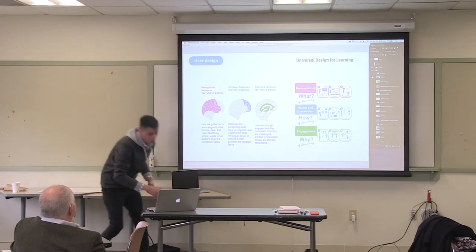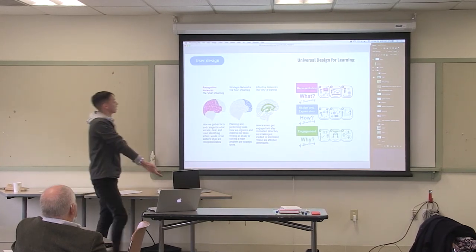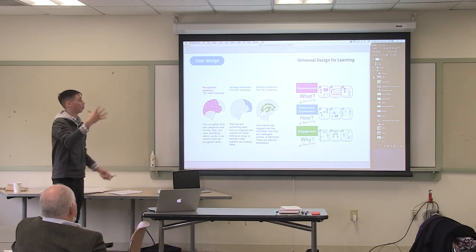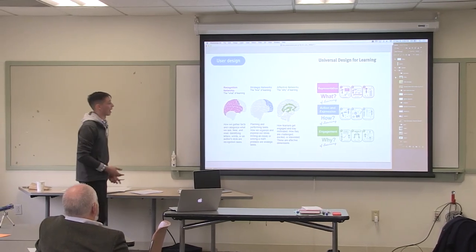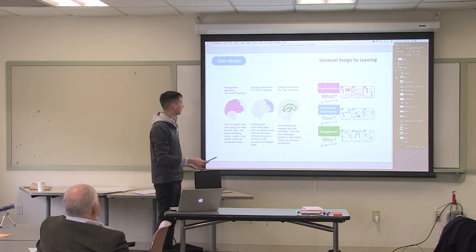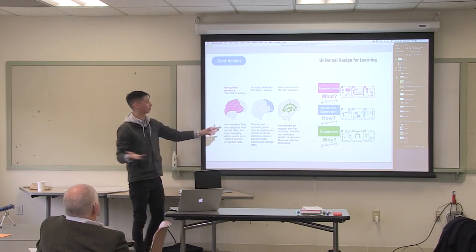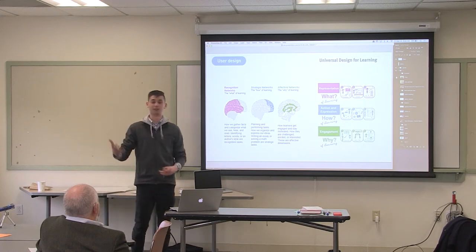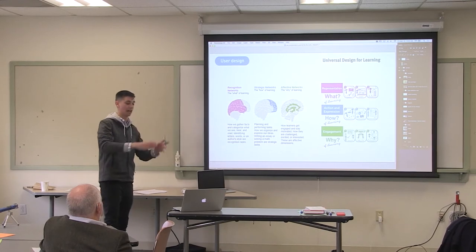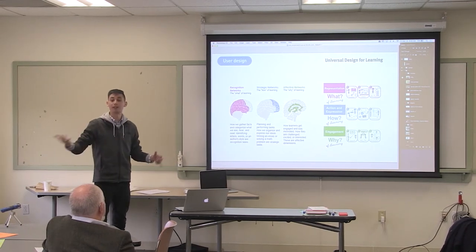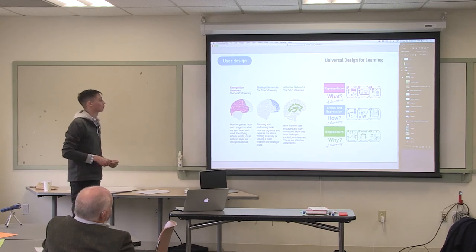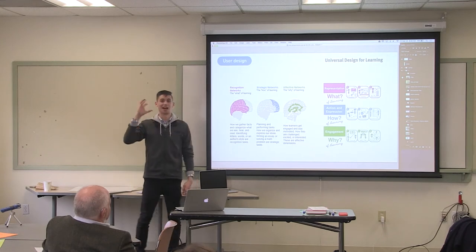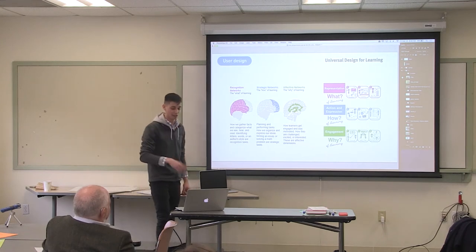UDL is based on science — on parts of the brain. Recognition, strategy, and affect: the what, how, and why. It pinpoints what parts of the brain actually do these actions. Everyone goes through this process to learn, but people learn differently. We have different cognitive differences, and people who don't fit what we're calling the average box are getting failed out of schools — because we're not designing for everyone. We're designing for this average, non-existent person.